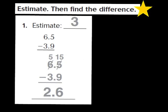Let's take a look at question number 1. It has already been completed for us, but it's a good model for how to estimate and then find the difference. For question 1, I have 6 and 5 tenths, and from that I'm subtracting 3 and 9 tenths. Our first job is to estimate. Focusing on 6 and 5 tenths: the 5 tells me to round up, so 6 becomes 7.